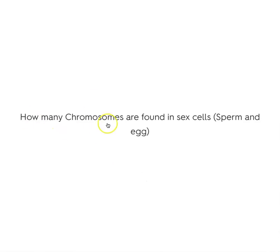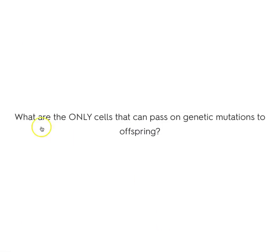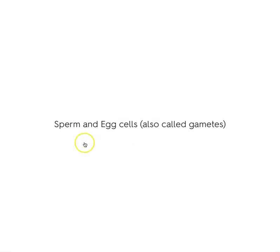How many chromosomes are found in sex cells — sperm and egg? Half — 23 chromosomes are found in sperm and egg. What are the only cells that can pass on genetic mutations to offspring? Sex cells, gametes — sperm and egg. If there's a mutation in the sperm and the egg, that is the only way the mutation is passed on, not in any other cell.